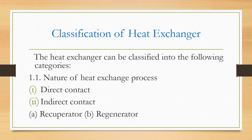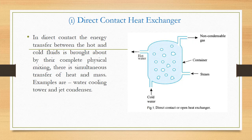Classification of heat exchangers: the first classification is based on the nature of the heat exchange process. They can be either direct contact or indirect contact. In the indirect contact type, recuperators and regenerators are included. In a direct contact heat exchanger, the hot fluid and cold fluid have direct contact with each other. Examples are water cooling towers and jet condensers.